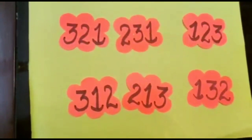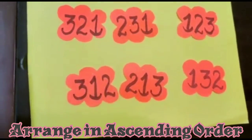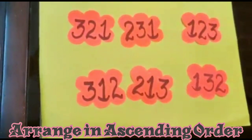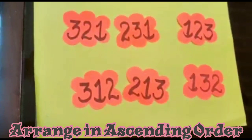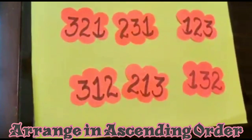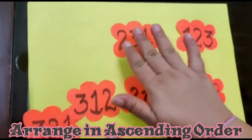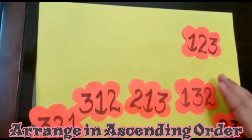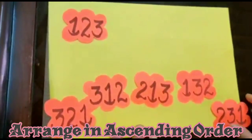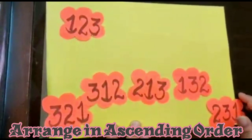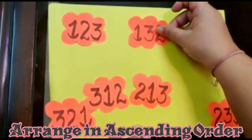Now let's add some twists to it. We are going to use these 6 numbers and arrange them in ascending order — from the smallest to the greatest. Which will be the smallest 3-digit number out of these? 123. Now after this, which number should come? 132.